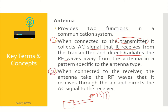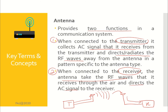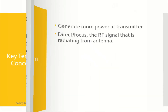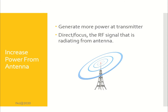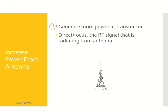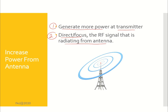The second function is when connected to the receiver: the antenna will take the waves it receives through the air and direct the signal to the receiver. In order to increase power from the antenna, there are two ways: the first one is to generate more power at the transmitter, and the second one is to direct or focus the radio frequency signal radiating from the antenna.